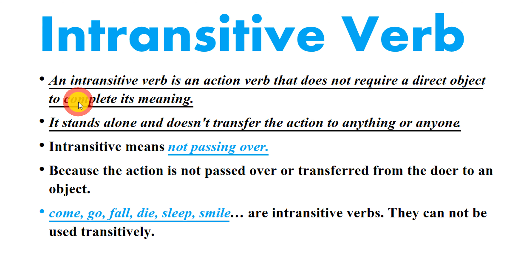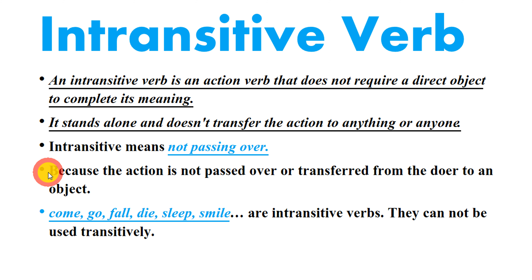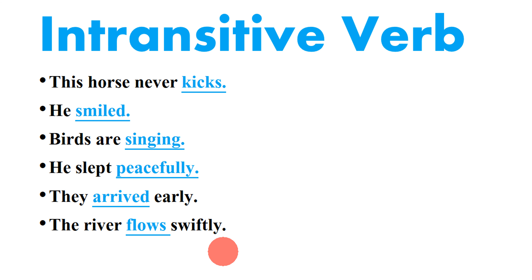So what is an intransitive verb? An intransitive verb is an action verb that does not require a direct object to complete its meaning. It stands alone and does not transfer the action to anything or anyone. Intransitive means not passing over, because the action is not passed over or transferred from the doer to an object. Examples of intransitive verbs include come, go, fall, die, sleep, and smile.